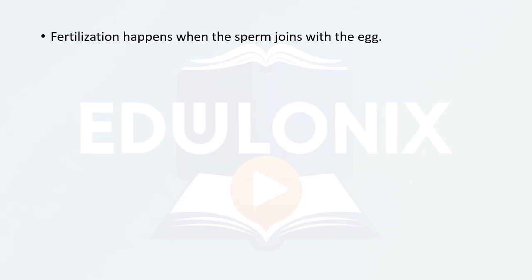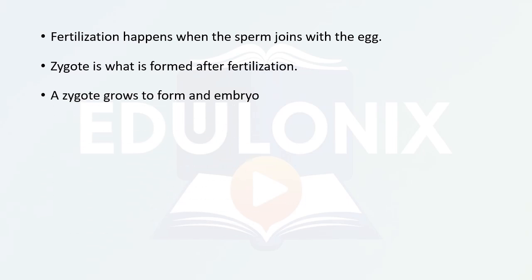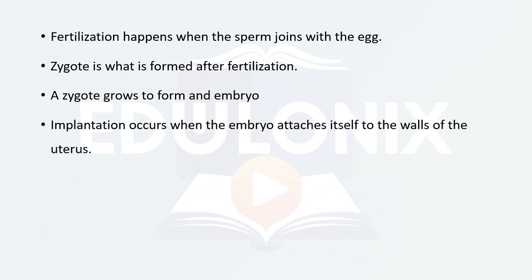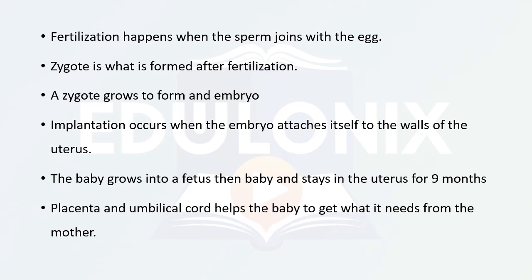In today's lesson, we learned that fertilization happens when the sperm joins with the egg or ovum, and the zygote is the single cell formed after fertilization. A zygote grows to form an embryo, and then implantation occurs where the embryo attaches itself to the walls of the uterus. The baby grows into a fetus and stays in the uterus for nine months. The placenta and umbilical cord help the baby get oxygen and nutrients from the mother.